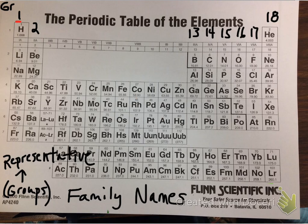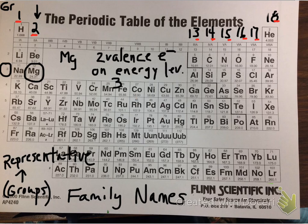Looking at the representative groups — groups 1, 2, and 13 through 18 — and just looking at the unit value in each group, we see we go 1, 2, 3, 4, 5, 6, 7, 8. From these numbers, we can tell the number of valence electrons found on the outermost level. For example, magnesium is in group 2 and would have 2 valence electrons on energy level 3. The period tells us which energy level is the outermost one.